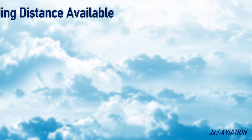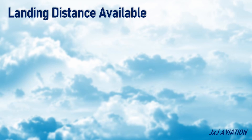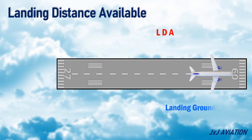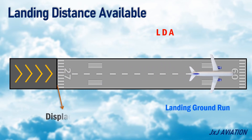Landing distance available, LDA: this is the length that is declared available for an aircraft's ground roll during landing. In case of a displaced threshold, the landing distance available will start from the threshold.